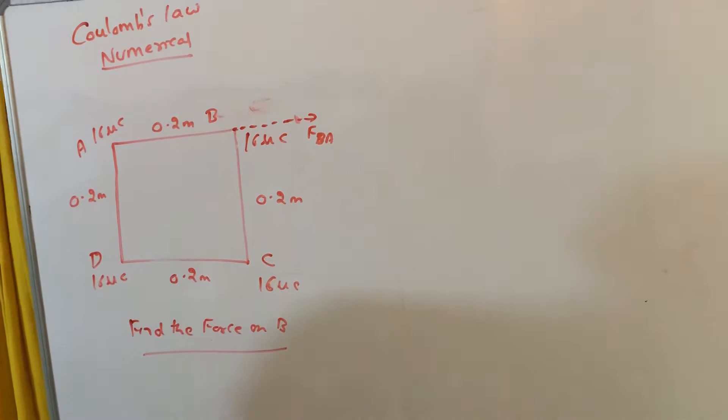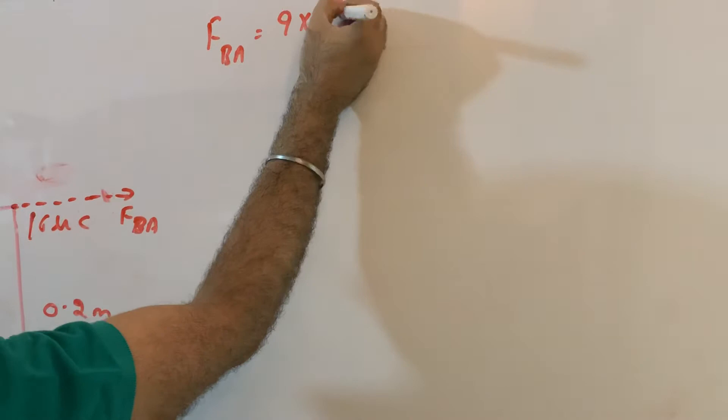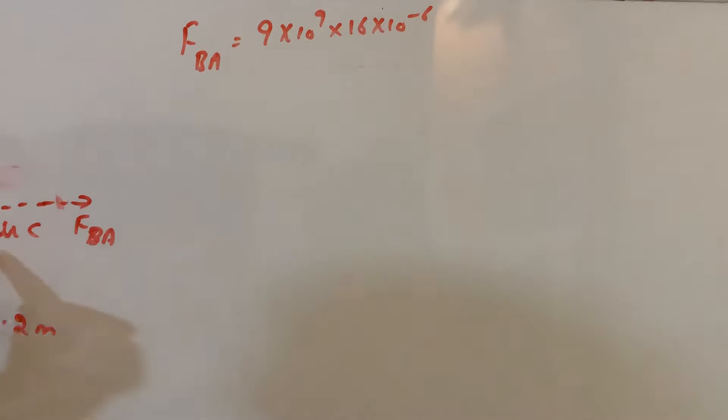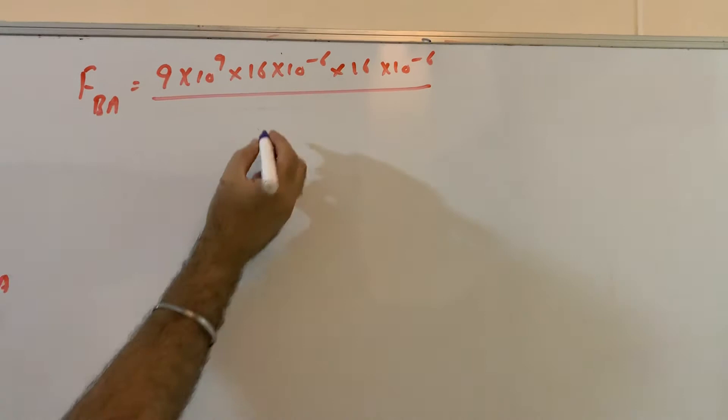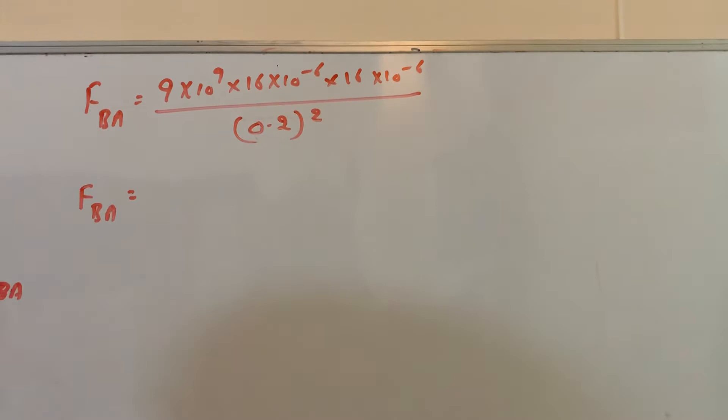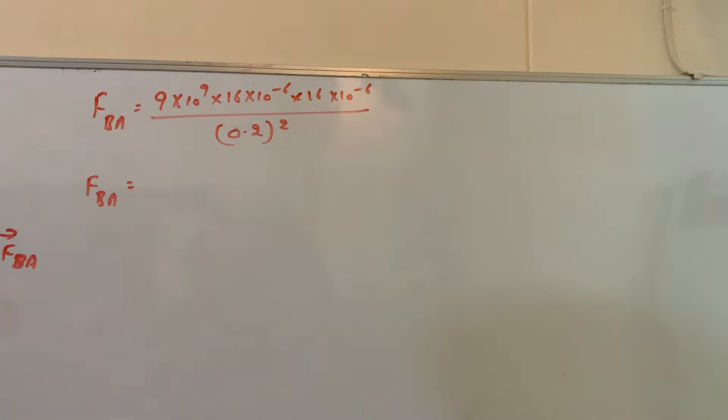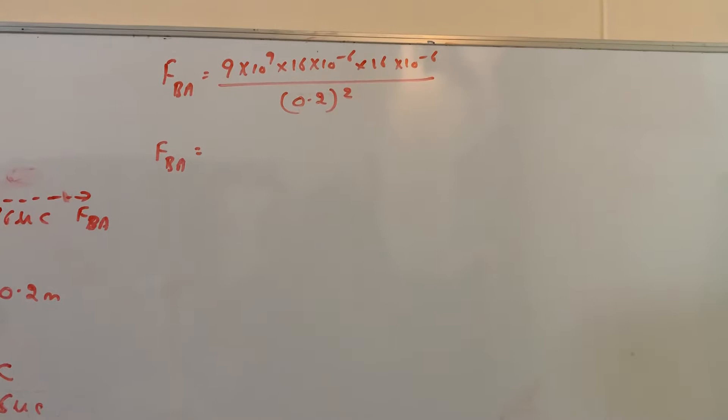So it will be in this direction, it will repel. So you will get force on B due to A. I write directly 9 into 10 power 9 into 16 into 10 power minus 6. So that, don't forget this is 16 microcoulomb. This is also 16 into 10 power minus 6 divided by the distance is 0.2 whole square. So force on B due to A. So just if you use calculator you can simplify this.